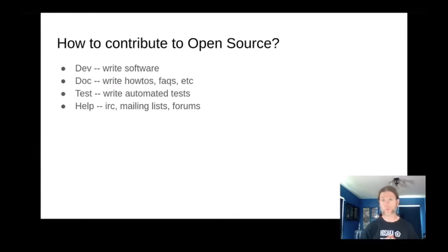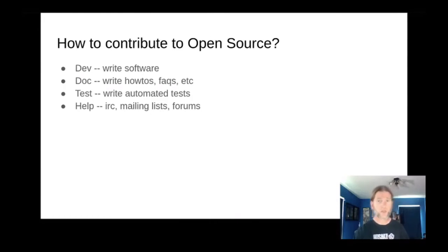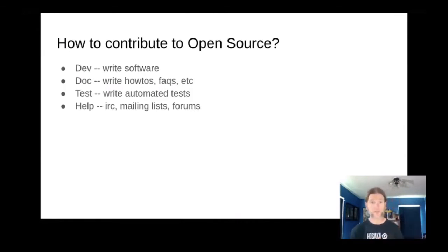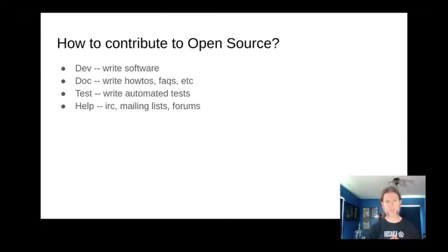Another way to contribute to an open source project is testing. A lot of projects could use more help with their testing, especially writing more automated tests. Some could also use help running test days, where groups of people try out the software and report issues. No matter what the project is, there's a good chance it could benefit from more testing. Another less direct but still very important way to contribute would be to provide help to others — if you know the software, you could help users with questions on IRC, mailing lists, or forums.